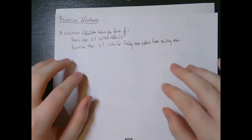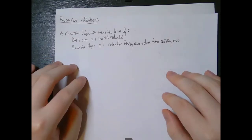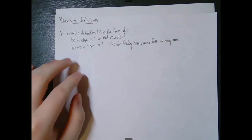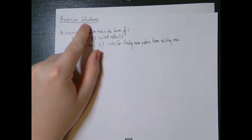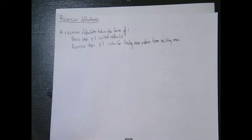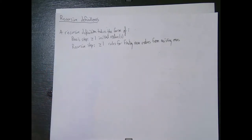We're going to look at sets, functions, and sequences in this video today. I want to point out specifically the word 'definition' here — this is a way to define discrete structures. A recursive definition for a set is just a way to define a set, an alternate way of using things like set builder notation or a written description of what elements are in the set, and a similar thing for functions and sequences.